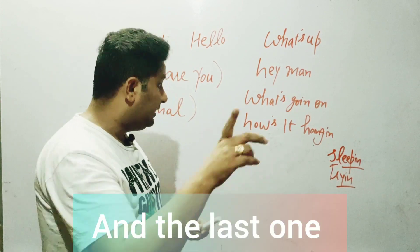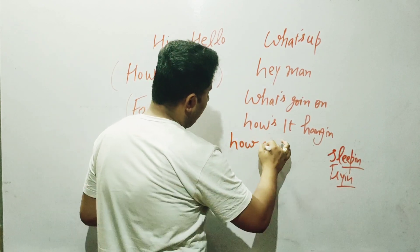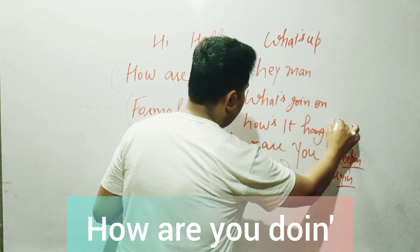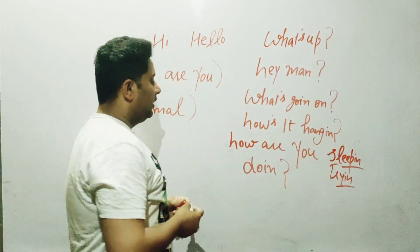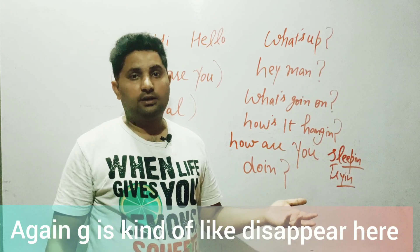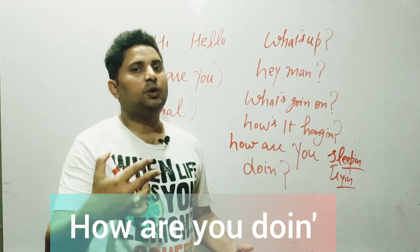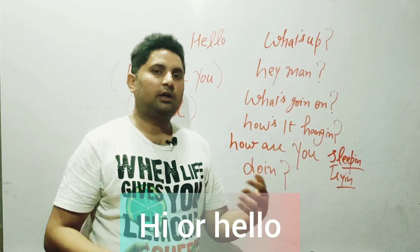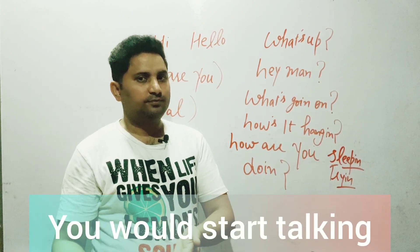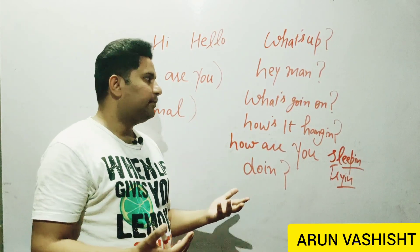The last informal one is 'how are you doing.' As you can see, the G is dropped again — 'how are you doin.' This means you are just saying hi or hello. Again, if the person is close to you, you would stay and start talking or begin a conversation. These are some of the ways you can say hi or hello informally.